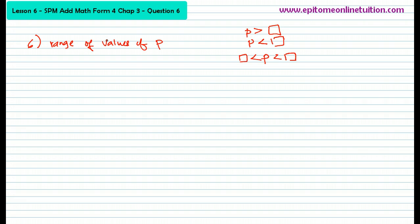Alright, so now let's continue. I just want you to be able to think about it when you look at the question. Don't just read the question without thinking. Right, let's move on. It says find the range of values of P for the quadratic function. Let's write it down.